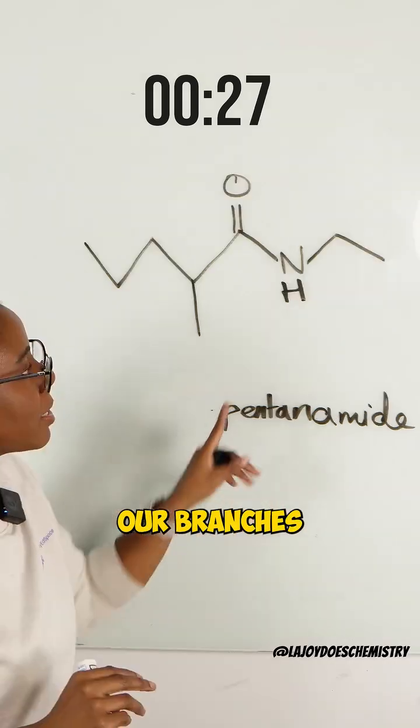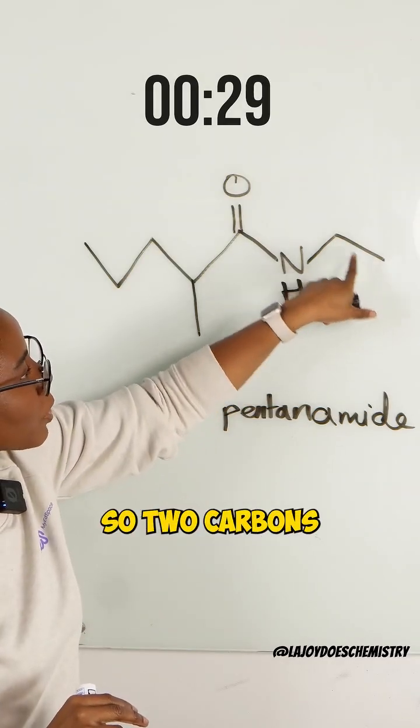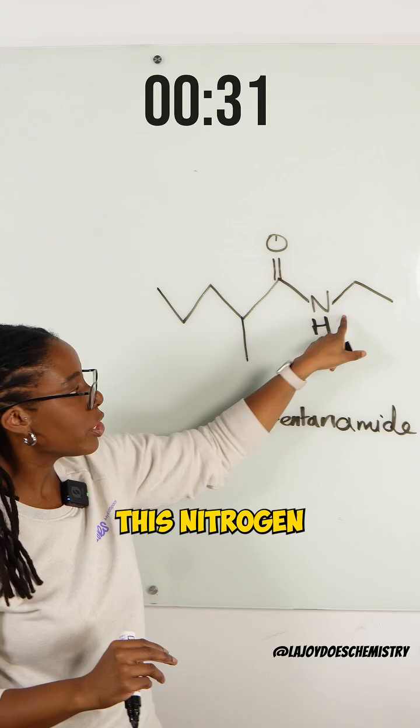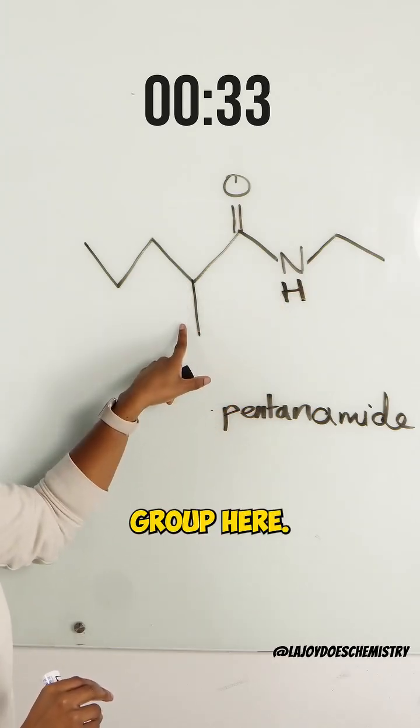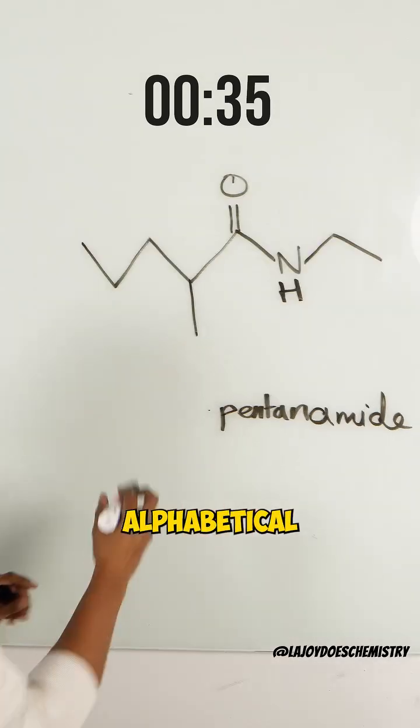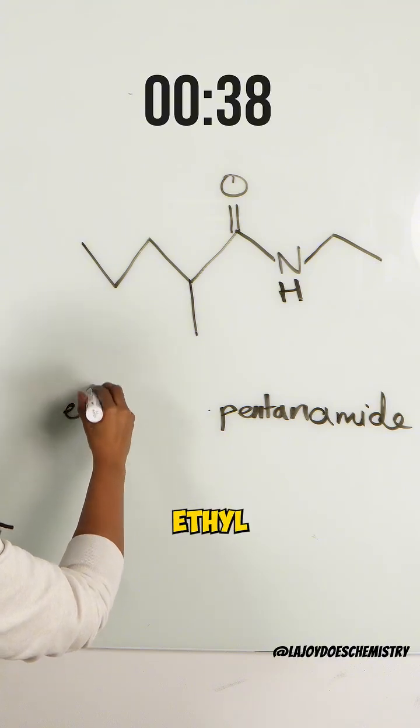Now we have to look at our branches. We have an ethyl group - two carbons attached to this nitrogen - and we have a methyl group here. We put those in alphabetical order, so that would be ethyl.